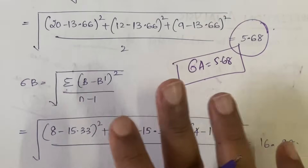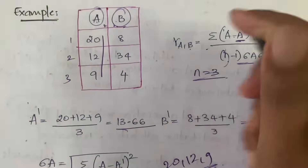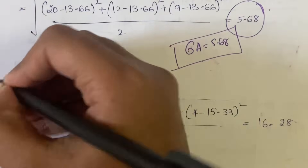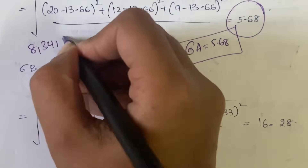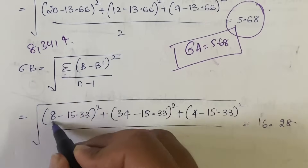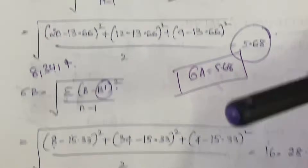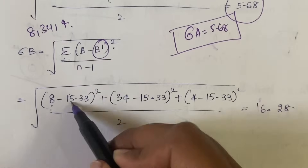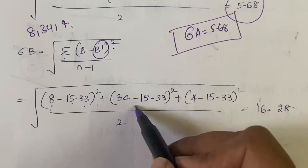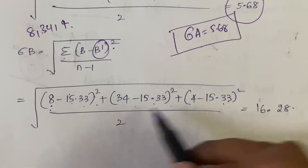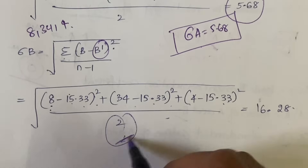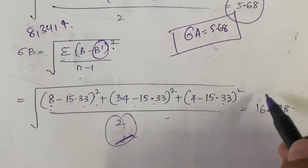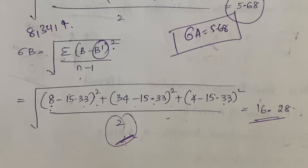Similarly, calculate sigma-B using B values 8, 34, 4 and B-bar = 15.33: sqrt[((8−15.33)² + (34−15.33)² + (4−15.33)²) / 2]. The result is sigma-B = 16.28.